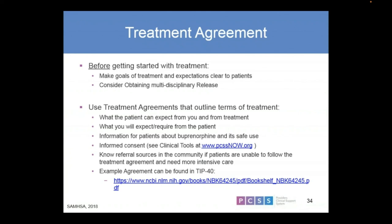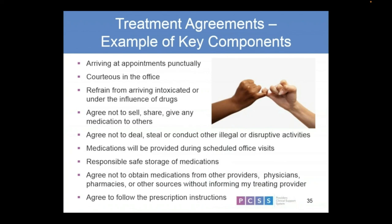Knowing referral sources in the community — if they're unable to follow the agreement, meaning they may need a more intensive level of care. Some key components of treatment agreements: making sure everybody's arriving on time — if they're consistently late, that makes the relationship hard to sustain. Being courteous in the office — not just to you, but also to every member of the team. If they're nice to you but rude to clinical staff, that needs to be addressed, because every part of the staff plays a role in recovery for this patient.